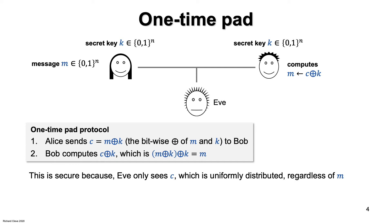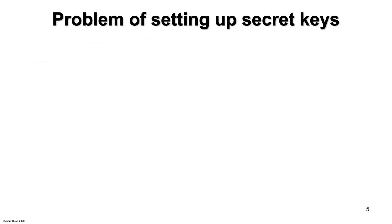This is called the one-time pad for historical reasons. There was a time when the keys were written on physical pads. And it's called one time because the key is never reused, which is necessary for the security to work. A natural question about implementing this protocol is how do Alice and Bob set up their secret key to begin with? So there's a key distribution problem, which is to set up a large number of secret key bits to be used later on in the one-time pad.